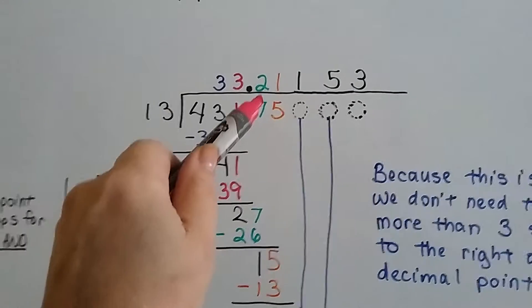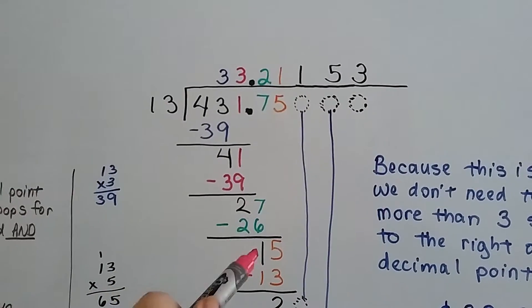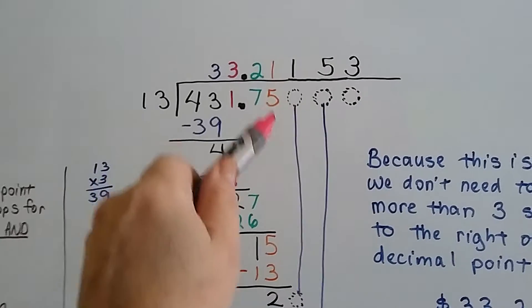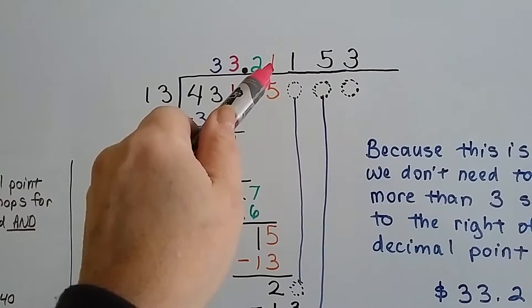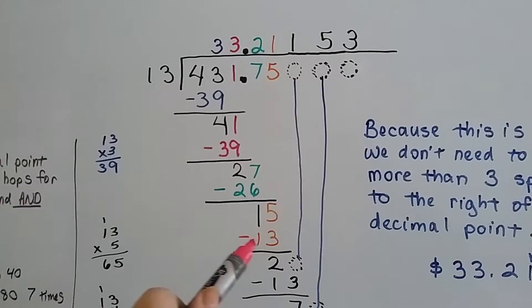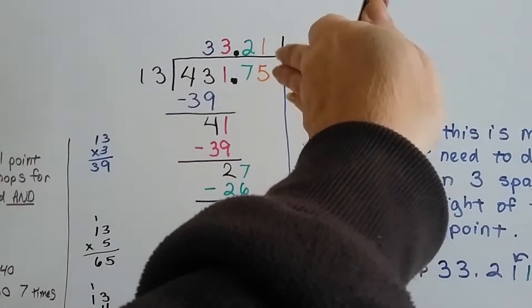13 goes into 27 two times. 2 times 13 is 26. We do our subtraction and get a 1. And now it's this 5's turn to come down. 13 goes into 15 one time. We put our 1 up there. 13 times 1 is 13. We get a 2 left over. And now we're stuck because that's where it stopped.